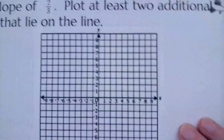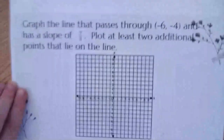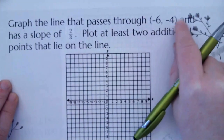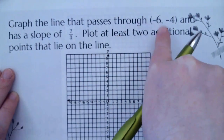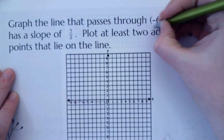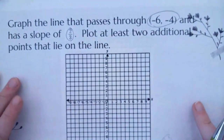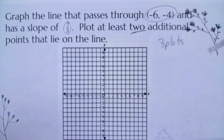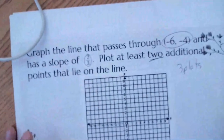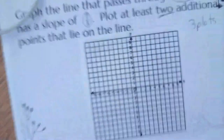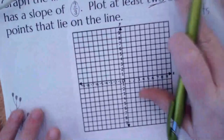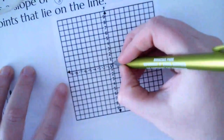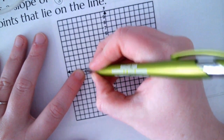Now we are on: graph the line that passes through negative 6, negative 4, and has a slope of 2 thirds. Plot at least two additional points on the line. We have to plot this point first. Remember the dance — x goes this way, y goes this way. Negative 6 is x and negative 4 is y, so we go over to negative 6 and down to negative 4. Our first point is right here.